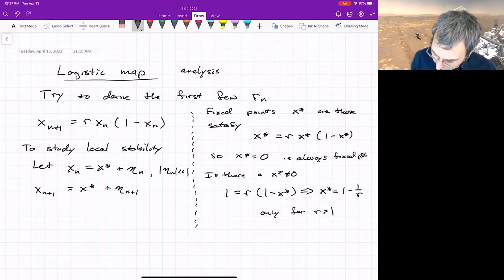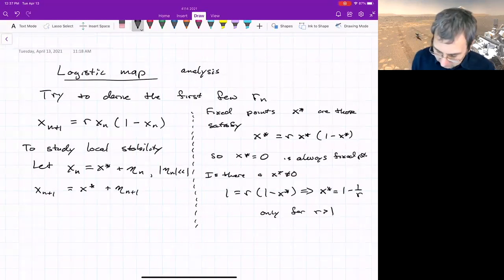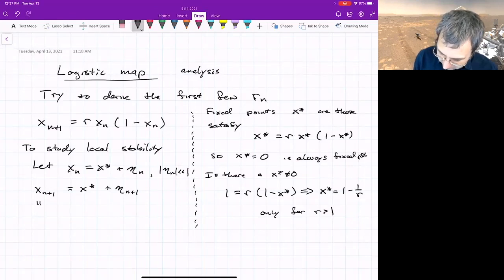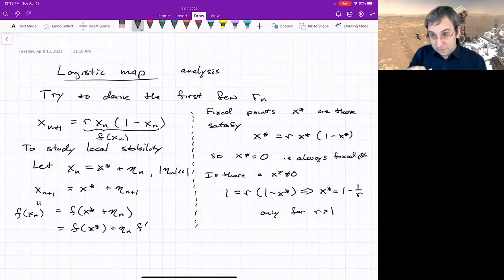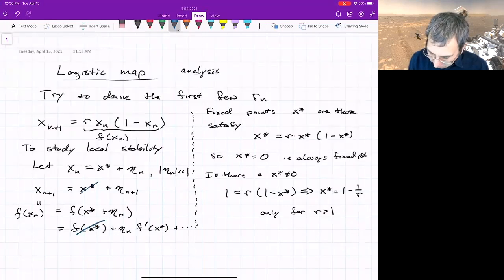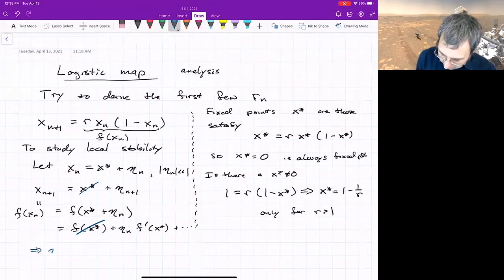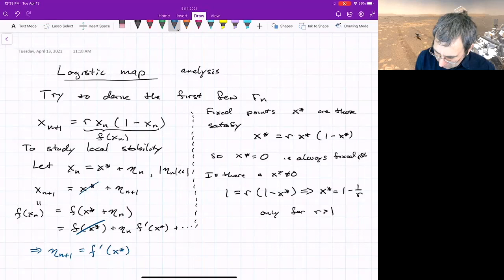x_{n+1} equals x* + eta_{n+1}. If we're near a fixed point, that displacement is going to grow or shrink. We want to find the mapping. What is eta_{n+1} as a function of eta_n? The right-hand side can be written as f(x_n), so this is f(x* + eta_n). Do a Taylor series expansion: f(x*) + eta_n*f'(x*) plus higher order terms. Because this is a fixed point, these will cancel out, so we're left with eta_{n+1} = f'(x*)*eta_n.